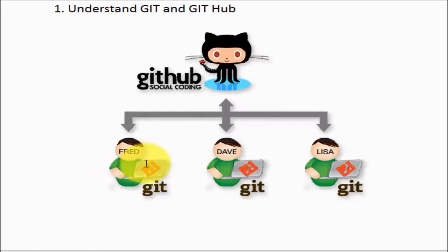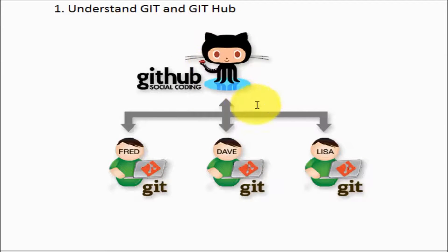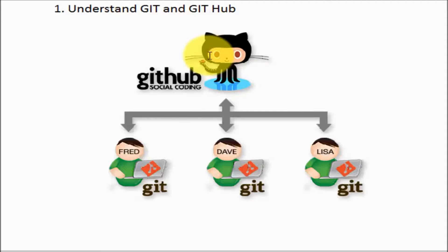We have three team members — Fred, Dave, and Lisa — who all have installed Git on their machines. They are sharing code with each other using GitHub. If I am Dave and I want to share my code with Lisa, I put my code in the centralized repository which is GitHub, and Lisa picks that code from there. I am not giving my code directly to Lisa; other team members take the code from GitHub, which is the centralized repository.